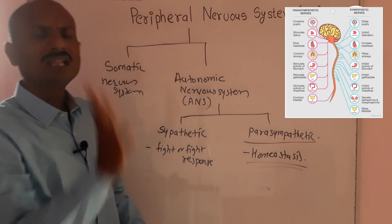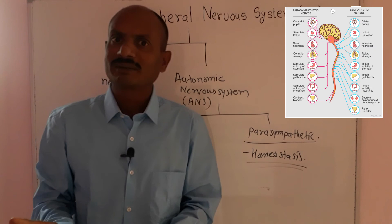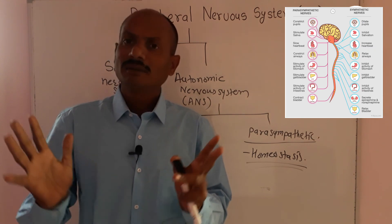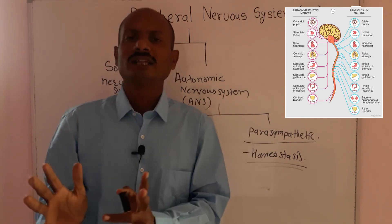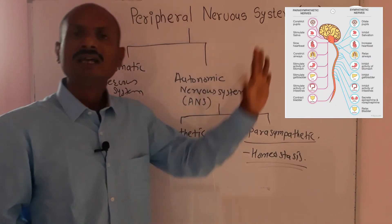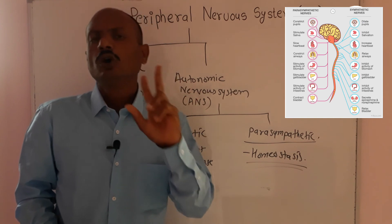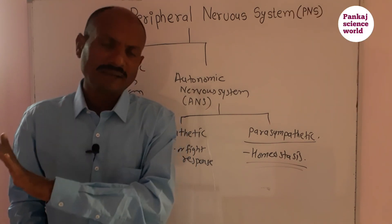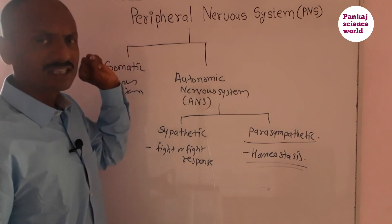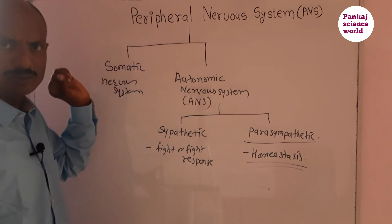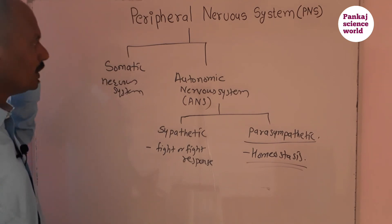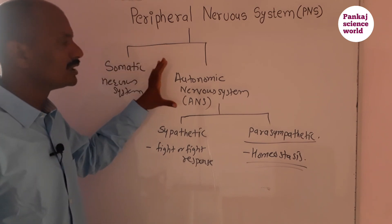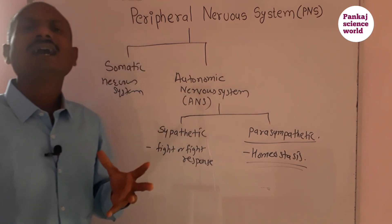The peripheral nervous system connects the central nervous system to various parts of our body through nerves. In the peripheral nervous system, nerves are of two types: cranial nerves with 12 pairs, and spinal nerves with 31 pairs. The peripheral nervous system has two parts: the somatic nervous system, which controls voluntary functions, and the autonomic nervous system, which is connected to involuntary organs and controls involuntary functions such as heartbeat.